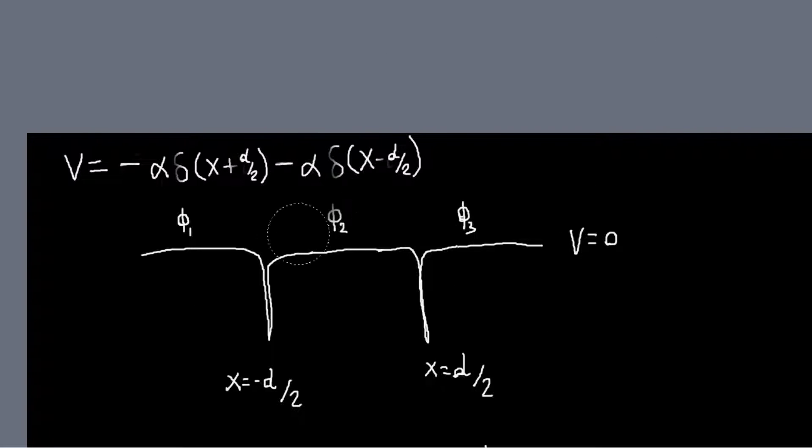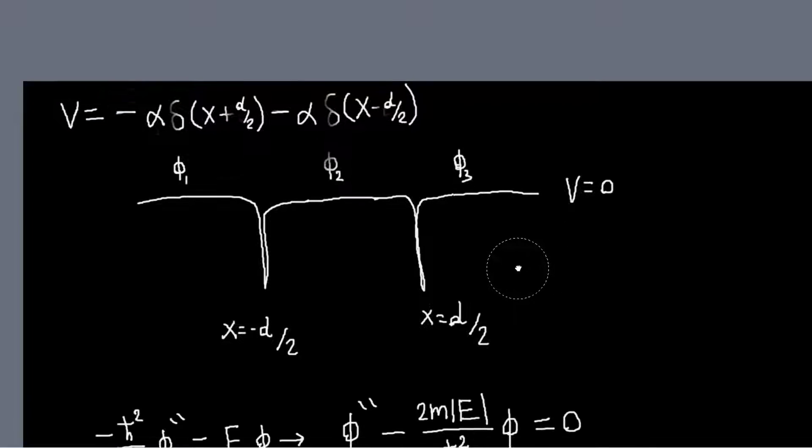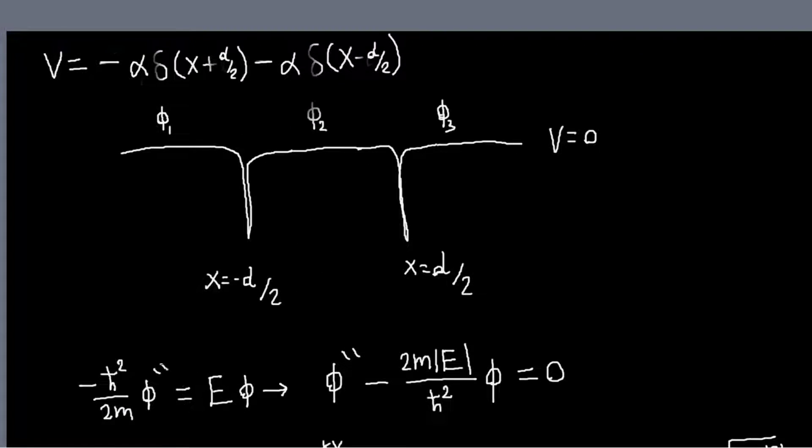Outside of each well, the potential is just zero. So in each region, our eigenvector equation will just become this. And again, we're looking for bound states. So we want the energy to be less than the energy of the top of the well. So we want E to be less than zero. And that means we can rewrite our equation like this.